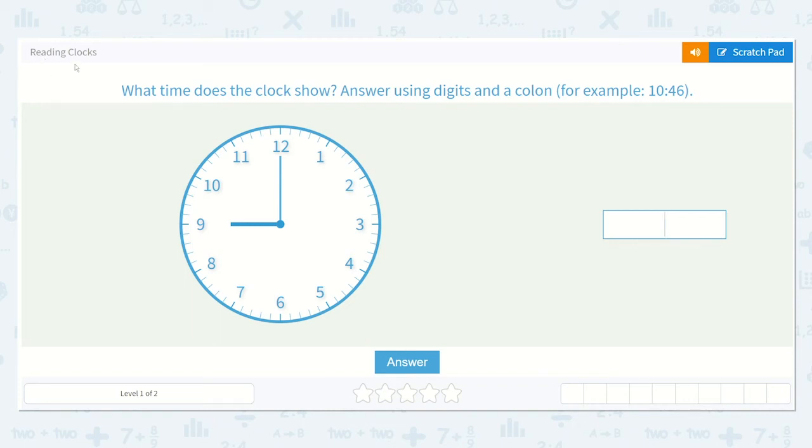Let's work on the lesson reading clocks. It asks us what time does the clock show? Answer using digits and a colon. For example, 10:46. So 10 colon 46.